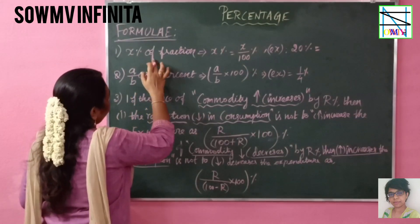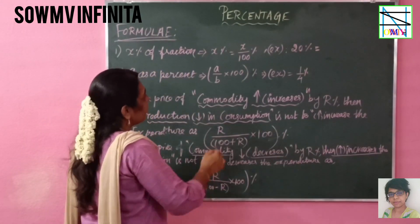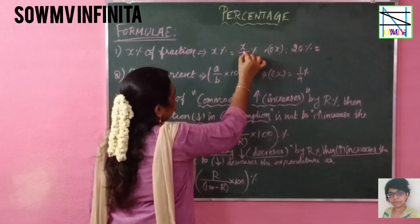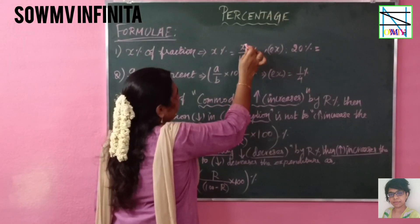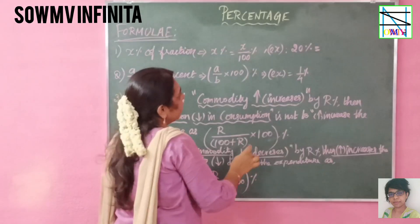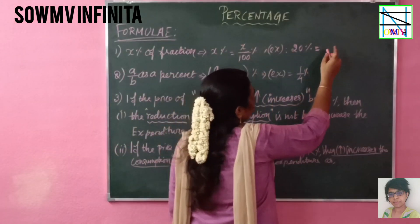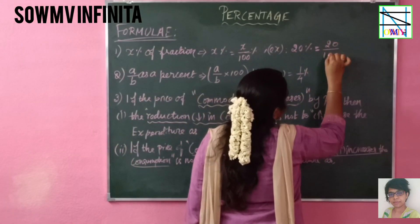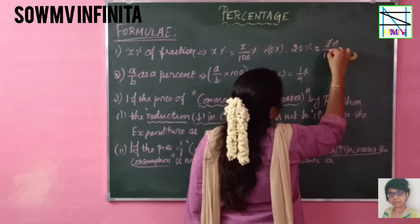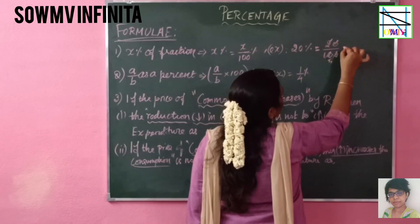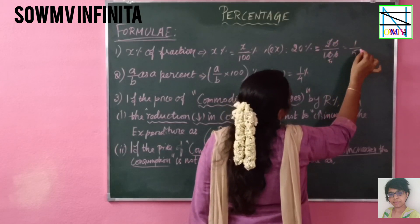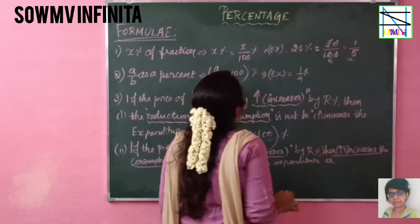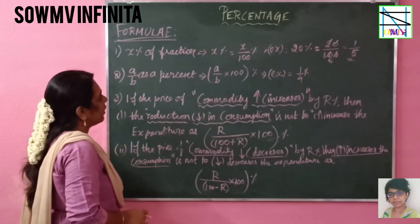x% of a fraction — that means x% is equal to x divided by 100. Percentage means x divided by 100. For example, 20% means 20 divided by 100. Let's calculate this value: that gives 1/5. This is the fraction value. This is x percentage.